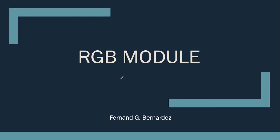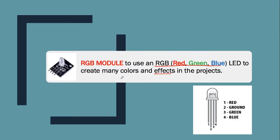Welcome to our new topic. In this video we will be talking about the RGB module, or what we call the red-green-blue LED light. Let's start with a definition. The RGB module can basically create many colors and affect our project. By using the colors red, green, and blue, we can actually combine a lot of colors based on these available colors.